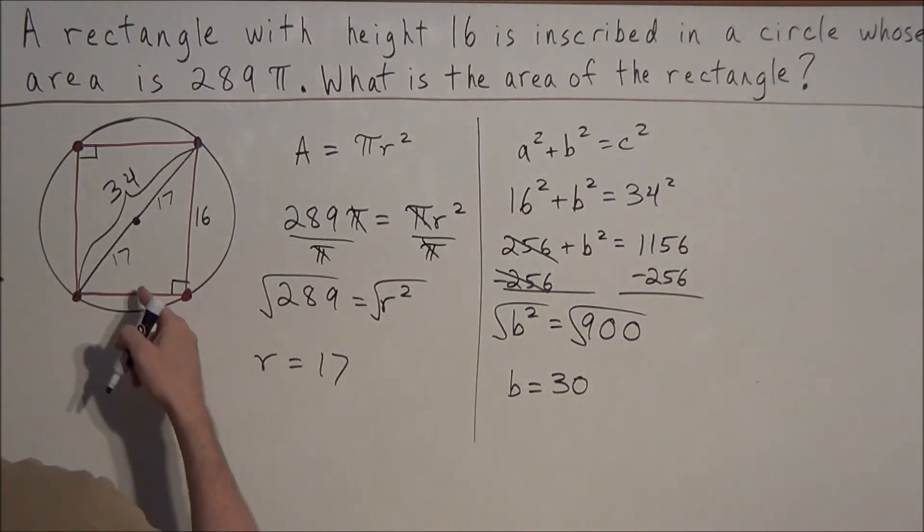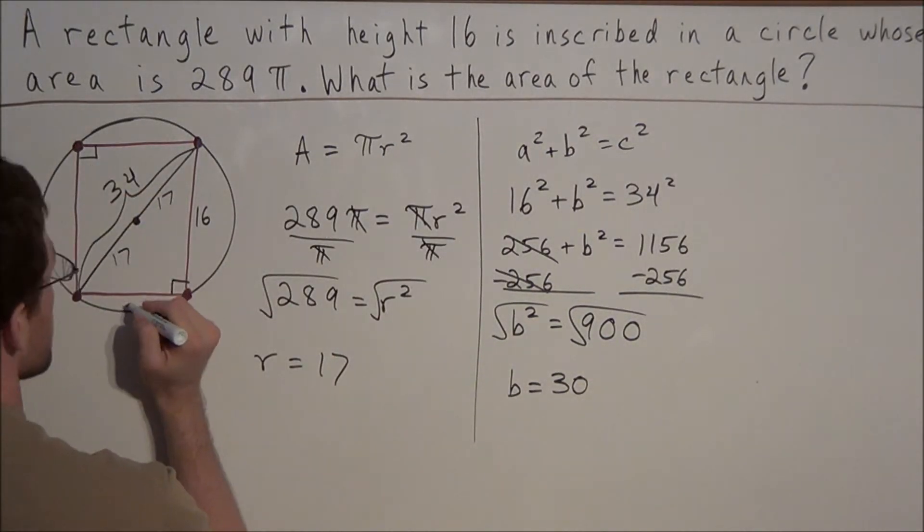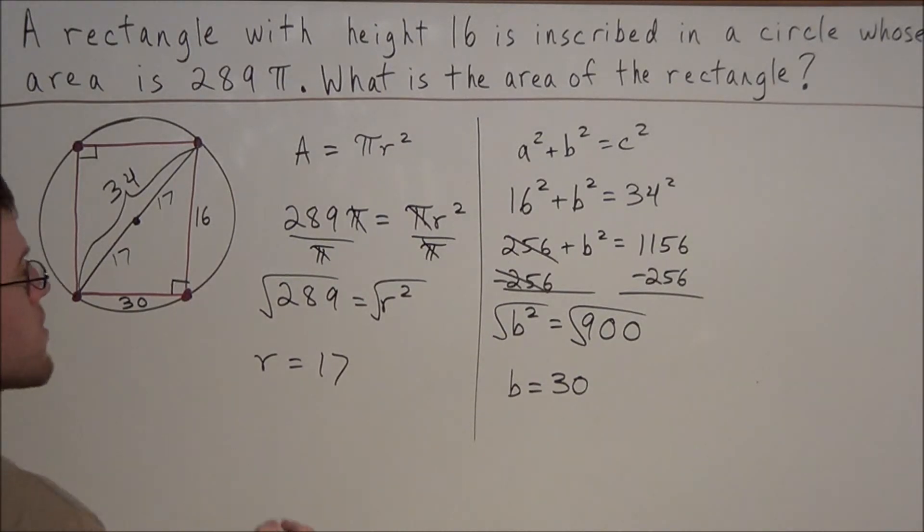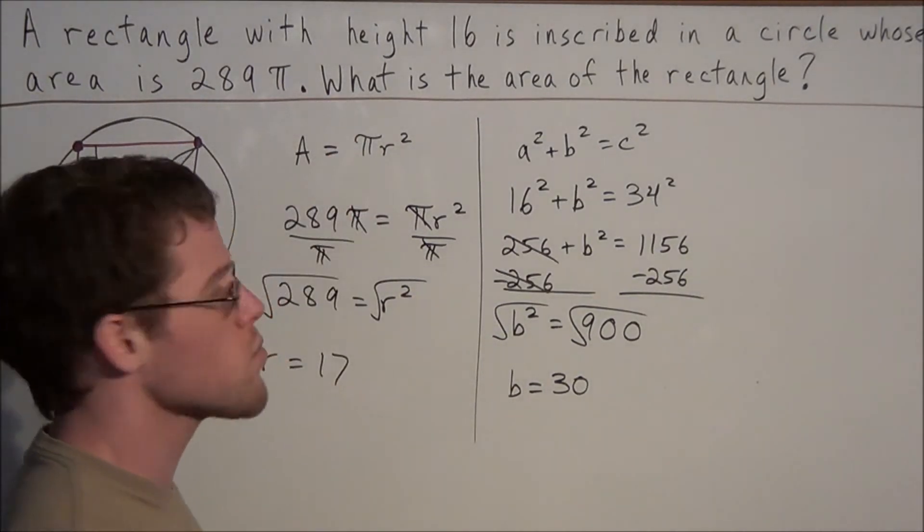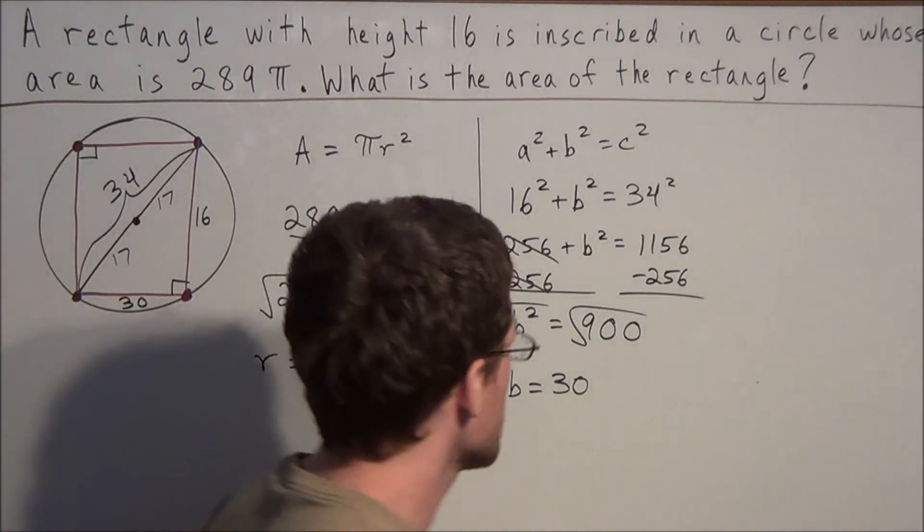So now we can label the missing side of this rectangle as 30. So now when we think about it, the question is asking us what is the area of the rectangle?